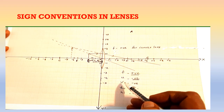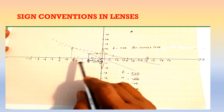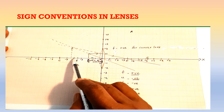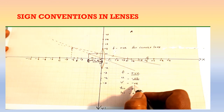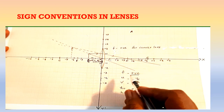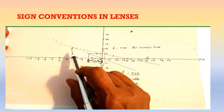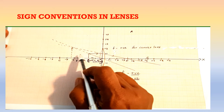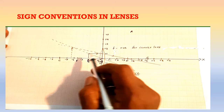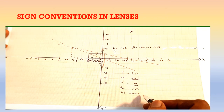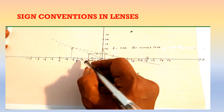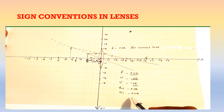What about V? V is the image distance from the origin. In this case, the image is coming on the left side of the origin, so V is considered as negative. Now for the height of the object and height of the image: both the object and image are formed in the upward direction, giving an erect image above the x-axis. So HO is positive and HI is also positive. If an inverted image is formed, HI would be negative.